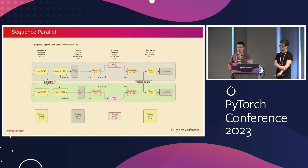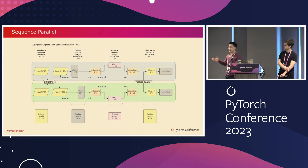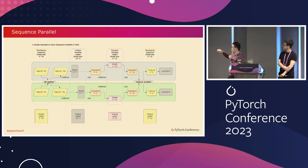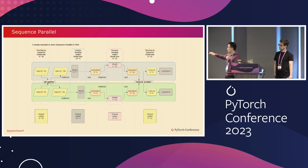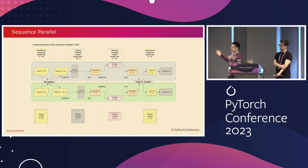I want to talk about our update for sequence parallel. As you can see in this diagram, instead of sending the same input across TP ranks, now we shard the input on the sequence dimension. We first do an all-gather, then do the classical two linear layer operations — first the column-wise linear, then row-wise linear — and in the end we do a reduce-scatter so it comes back to the original shape, then do the rest like layer norms, and repeat the whole thing again.